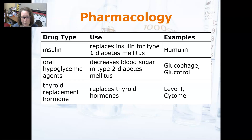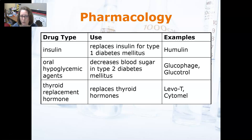Thyroid replacement hormone replaces thyroid hormones — like Levothyroxine and Synthroid — and is used in cases of hypothyroidism when a patient doesn't produce enough thyroid hormone. That wraps it up for our therapies for the endocrine system.